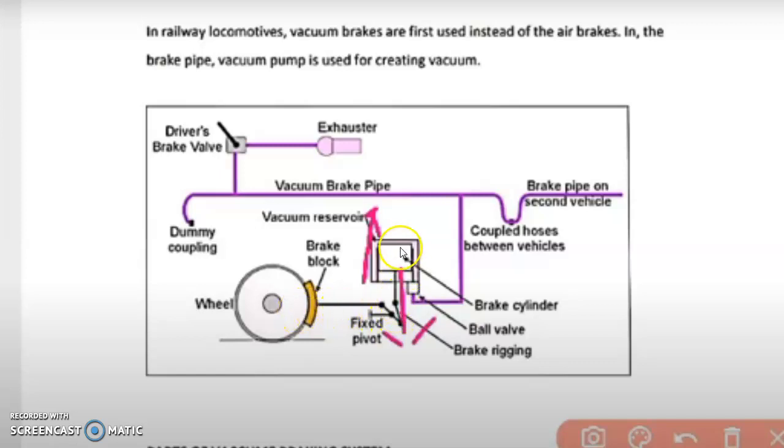When the driver operates this brake, the exhauster sucks the air from this brake cylinder and throws it to the atmosphere. Due to that, the brake rigging puts a force so that the brake shoe contacts with this wheel. Therefore, friction occurs and the brakes are applied.